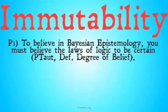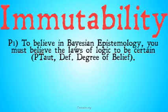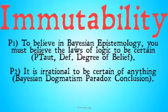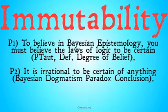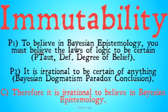Here's the argument: To believe in Bayesian epistemology, you must believe the laws of logic to be certain. That's just the probability tautology principle and the definition that degrees of belief map perfectly onto the laws of probability. Premise two: it is irrational to be certain of anything — that's the conclusion from the Bayesian dogmatism paradox in our previous series. Therefore, it is irrational to believe in Bayesian epistemology. This just follows directly from the premises.